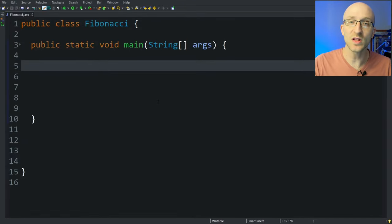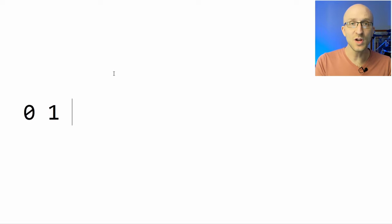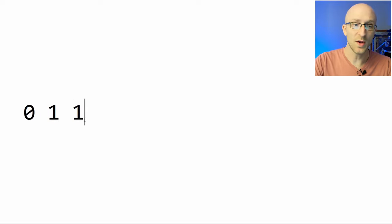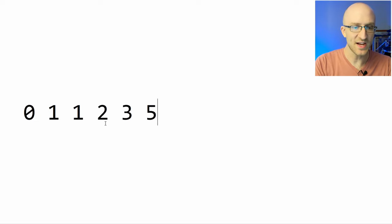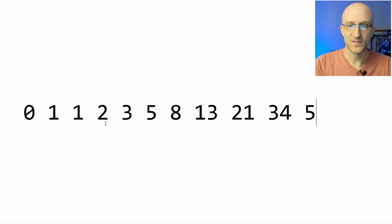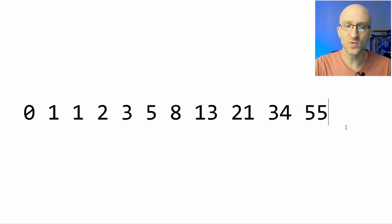Before we jump right into Eclipse and start coding, let's first do a quick refresh on what the Fibonacci sequence is. The Fibonacci sequence is just a sequence of numbers that starts with 0 and then 1, and then each number after that is just the sum of the previous two numbers. So for the next number, we do 0 plus 1, which is 1. Then 1 plus 1 is 2, 1 plus 2 is 3, 2 plus 3 is 5, 8, 13, 21, 34, 55, and it just keeps going like that forever.